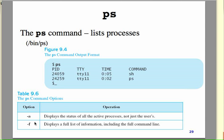There are a number of options; 'a' and 'f' are the most commonly used. 'a' lists processes that belong to your current terminal. If you want to display all active processes, you have to use the -x option.